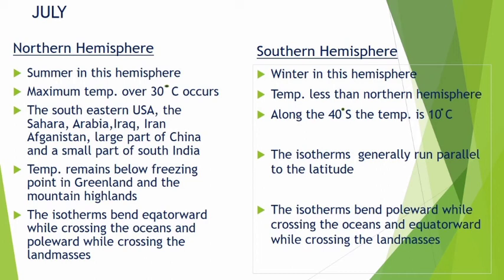In July, the temperature of 30 degrees Celsius is entirely in the northern hemisphere, specifically between 10 degrees to 40 degrees north latitudes. This includes South-Eastern USA, the Sahara, Arabia, Iran, Iraq, Afghanistan, large parts of China, and a small part of South India.